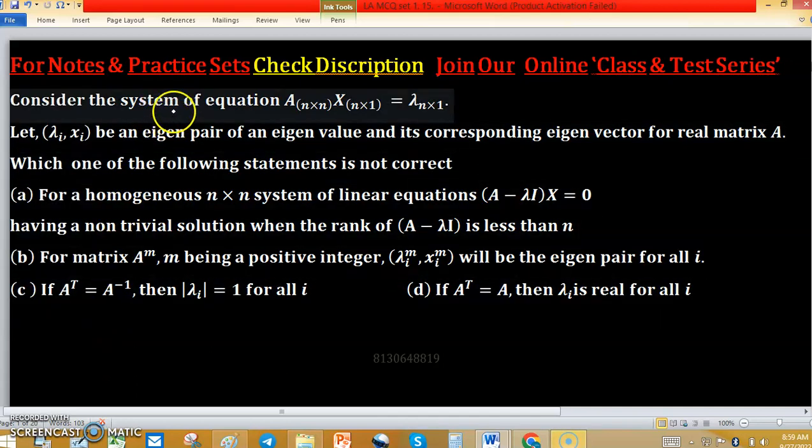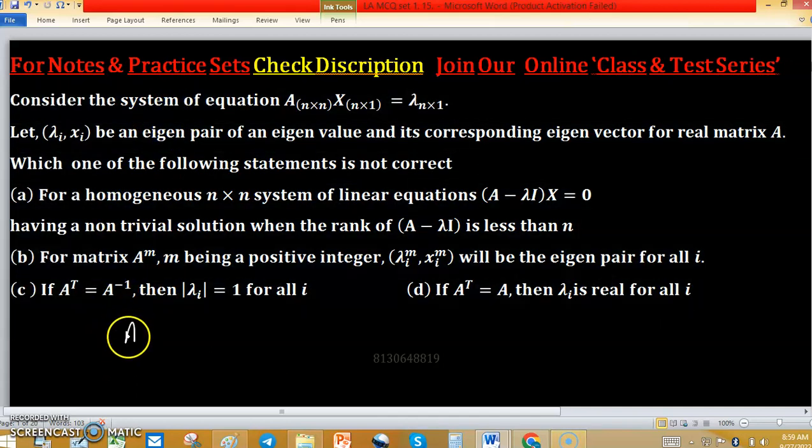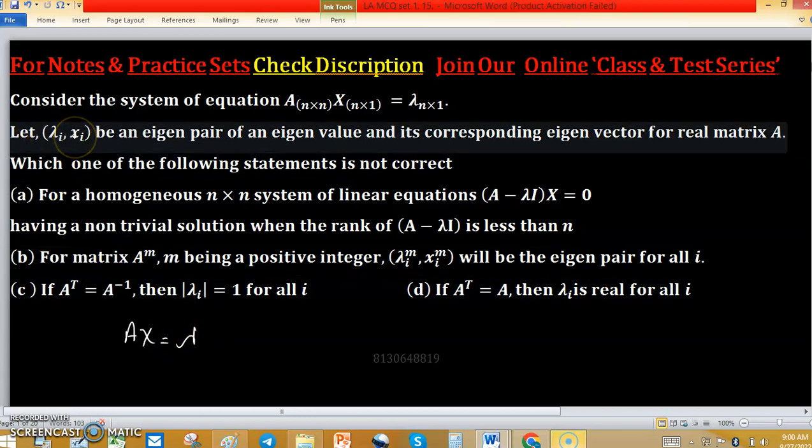Consider the system of equation Ax equals to lambda. Let lambda i, x i be an eigenpair of an eigenvalue and its corresponding eigenvector for real matrix A. Which one of the following is not correct?